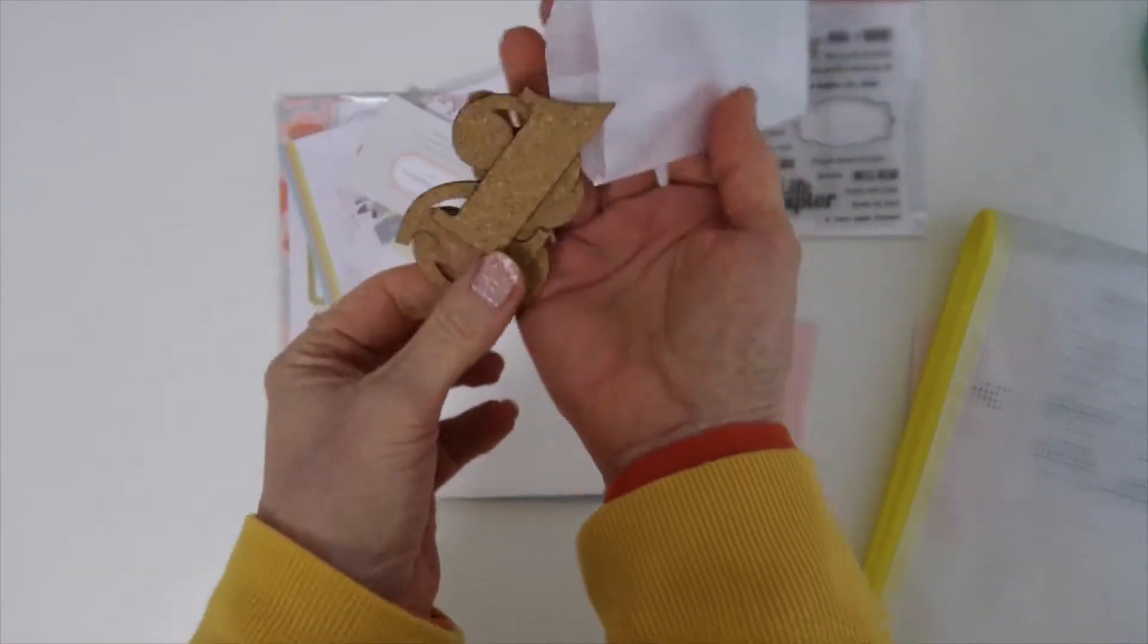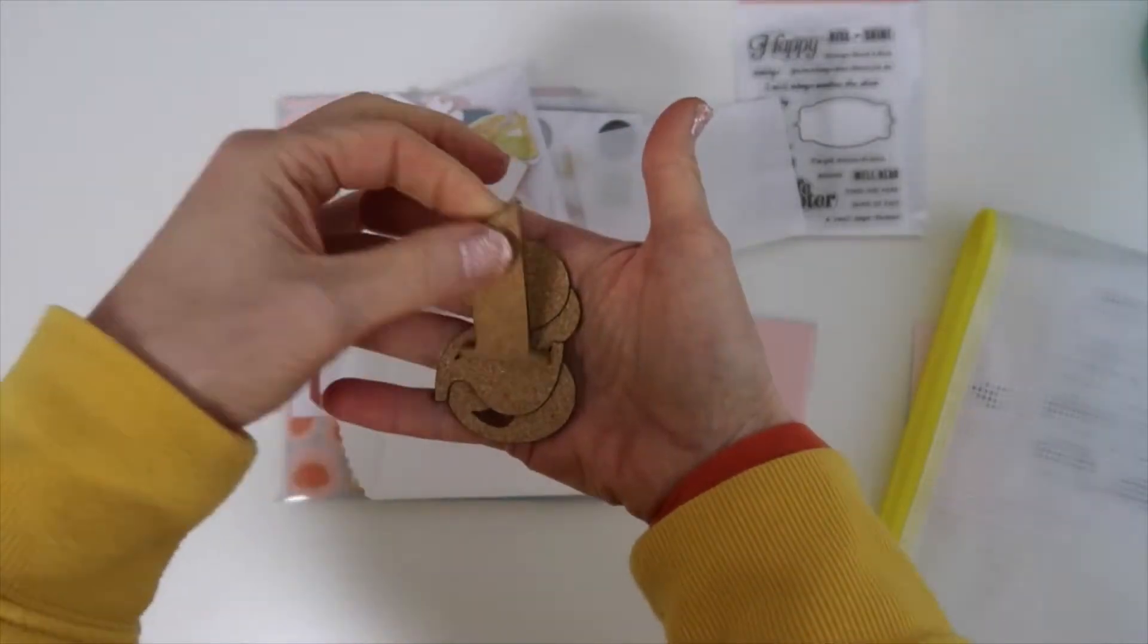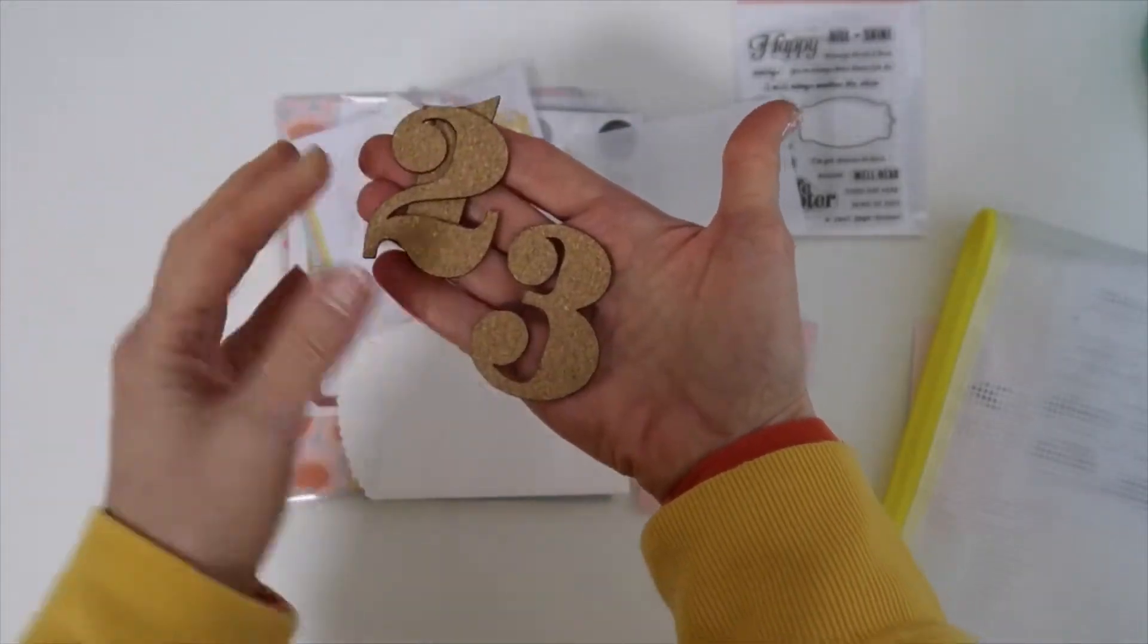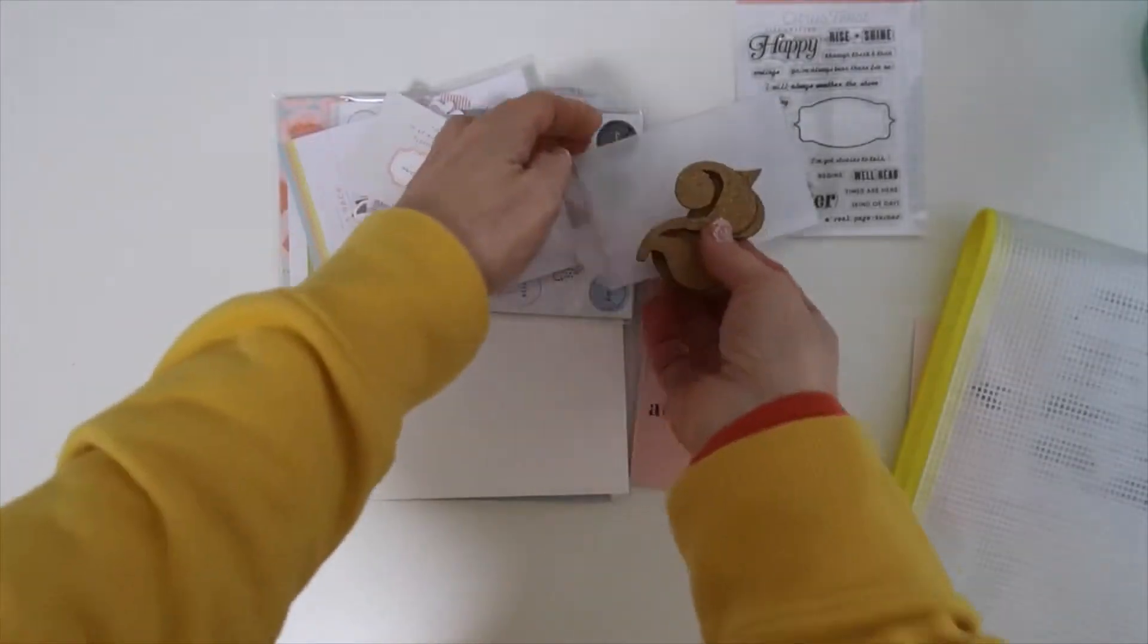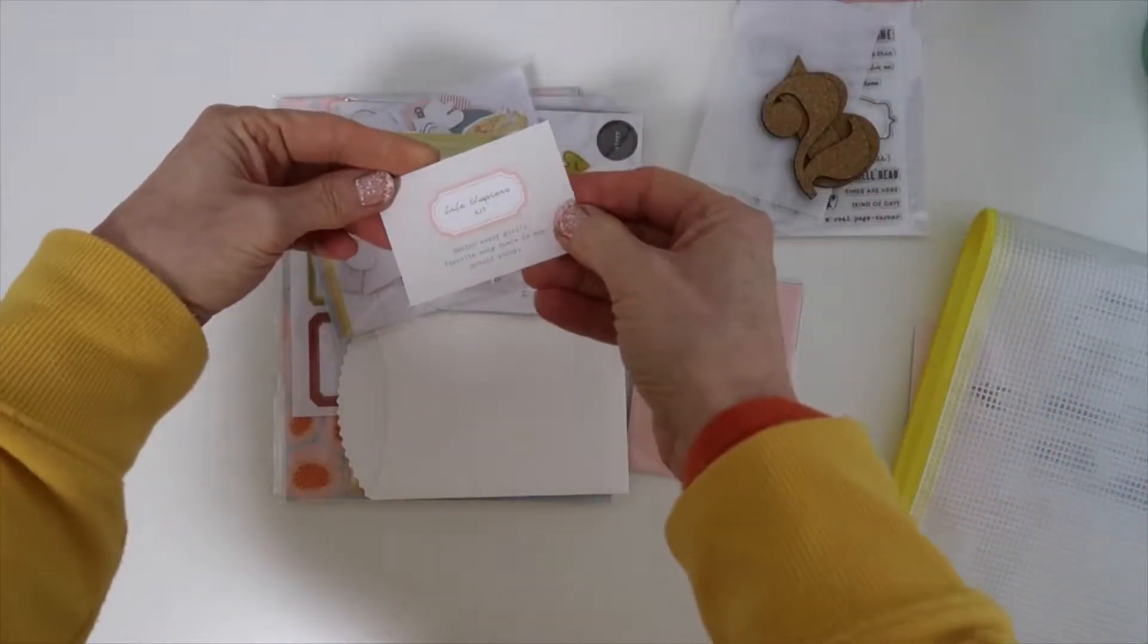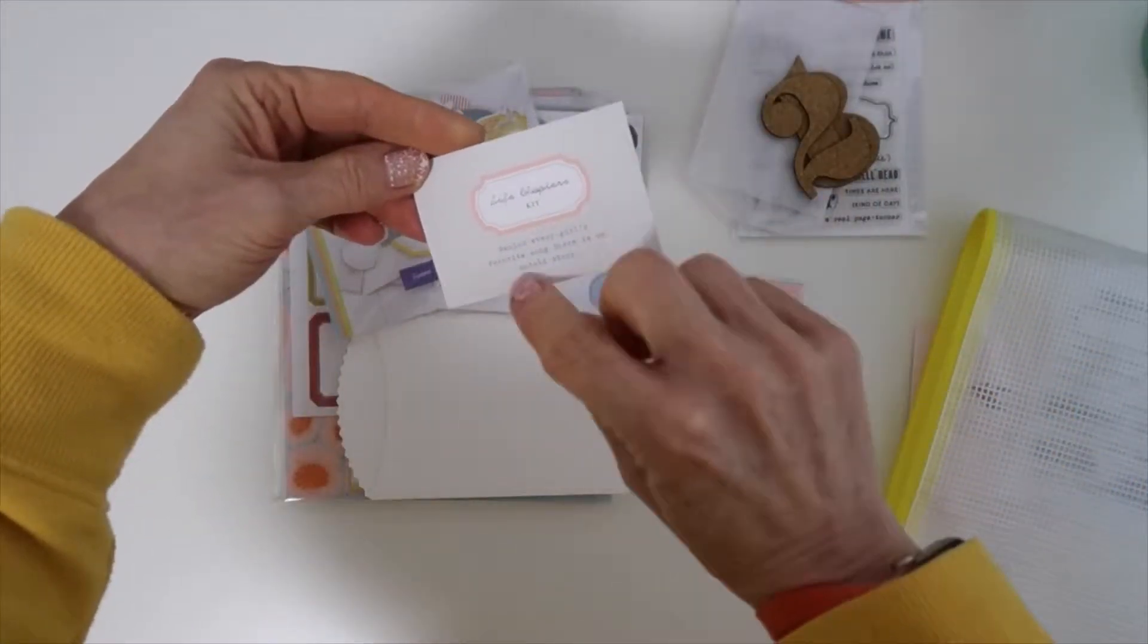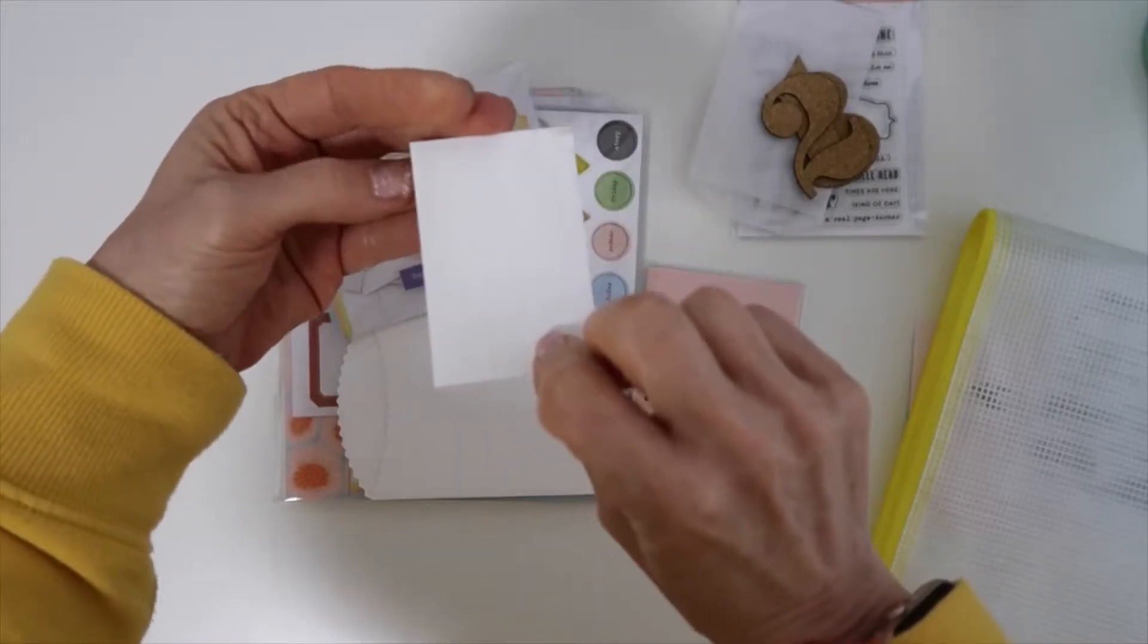The first one that I showed you was the Traveler's Notebook. So that one's a separate one but they're both really nice to have. Now I fell in love with these cork numbers. First of all, I love cork and then I love the font of the numbers.